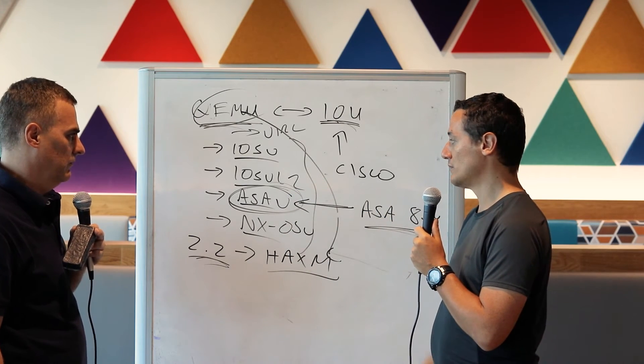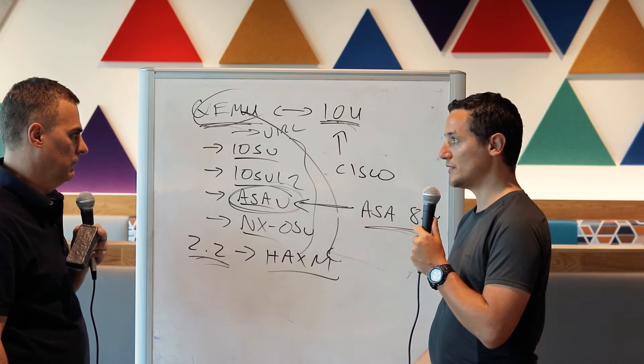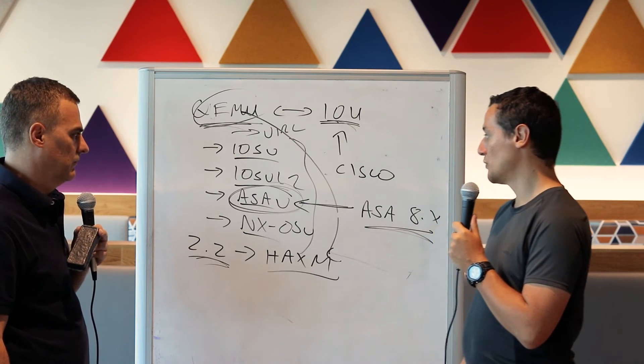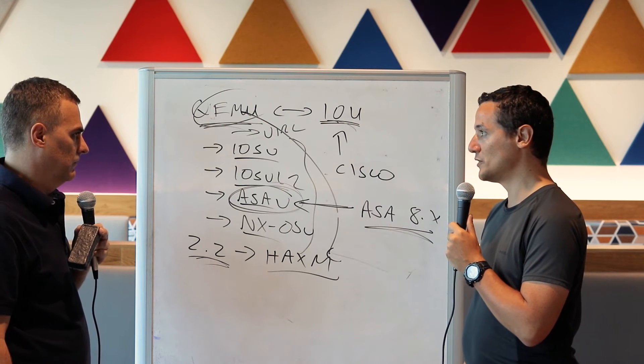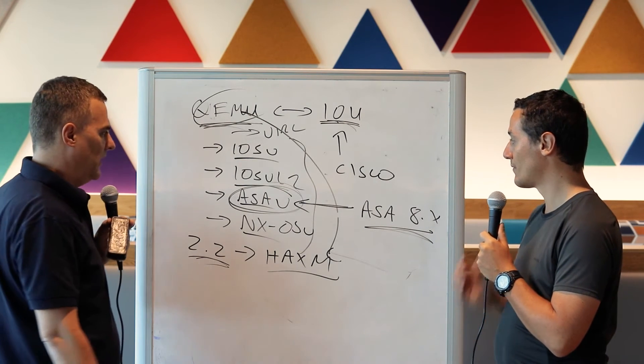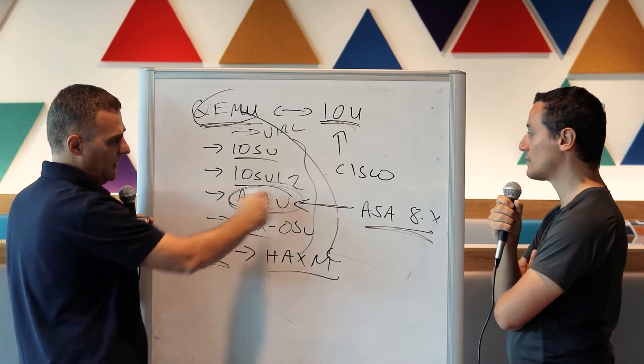So we recommend ASAV because ASAV is a lot more stable, it's a more recent image. So yes, go for ASAV when you want to run ASA firewalls. Cisco ASAV is the way that you should do it, any kind of firewall. Forget about ASA 8.